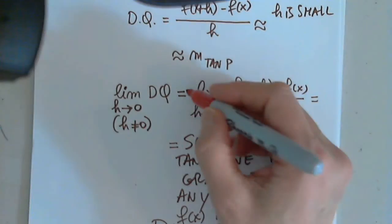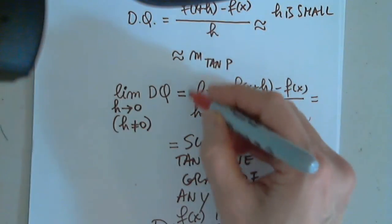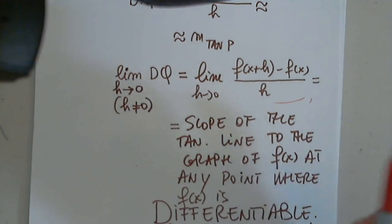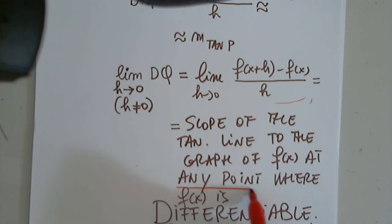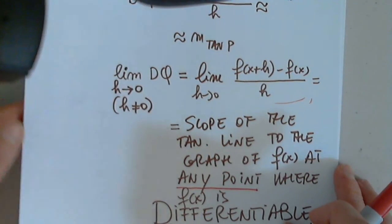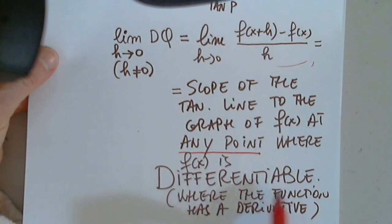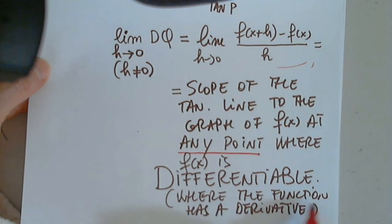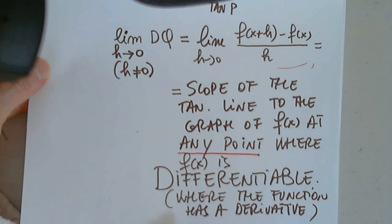And then if I want to determine the slope of the tangent line, I will say point Q gets closer and closer to P, which means that h approaches 0. So when I apply the limit operator to the difference quotient, meaning when h approaches 0, I create this limit of the difference quotient, which is nothing else but the slope of the tangent line to the graph of f of x at any point, not just P, but at any point where the function is differentiable.